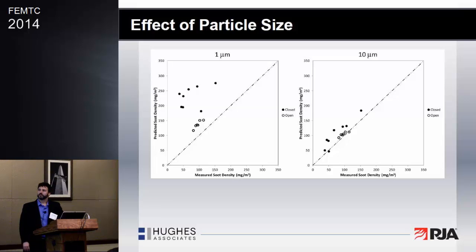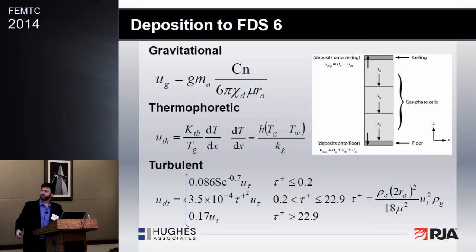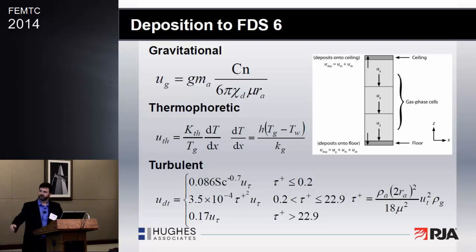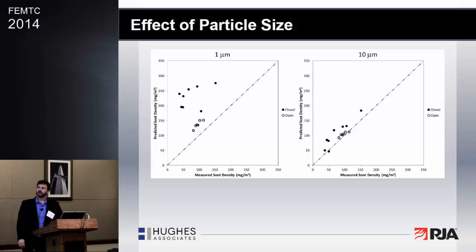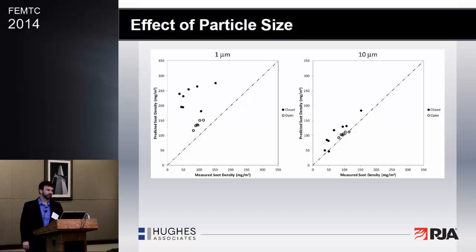When we look at the deposition equations, they all contain some kind of particle size term. Gravitational deposition includes a radius for the cross-sectional drag area. The thermophoretic term has a radius built into the K-thermophoretic coefficient. And turbulent deposition has a radius term in tau-plus for the particles. So all three mechanisms are particle-size dependent. We ran the entire benchmark series three test set with one-micron and ten-micron particles. With one-micron particles, the results looked similar to before — just a little shift downward toward the equal-prediction line. With ten-micron particles, we're suddenly getting fairly good predictions: open-door tests are nearly dead on, and we're only over-predicting by about 20% for closed-door tests versus the factors of two and three we saw before.